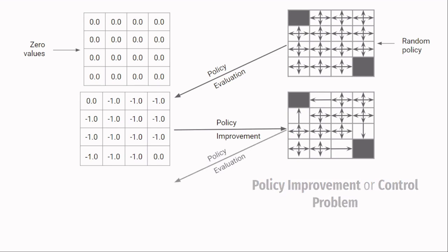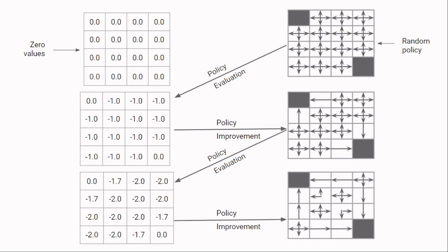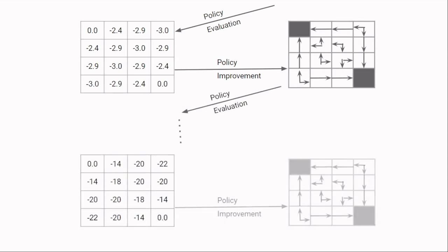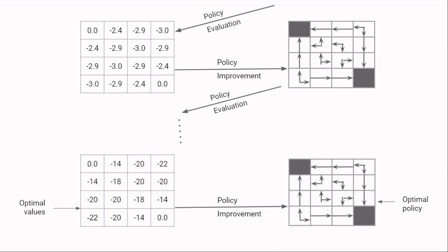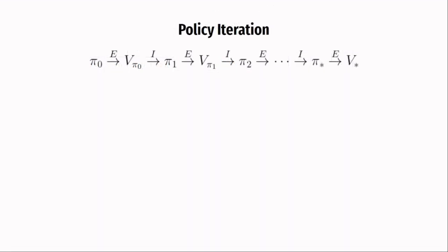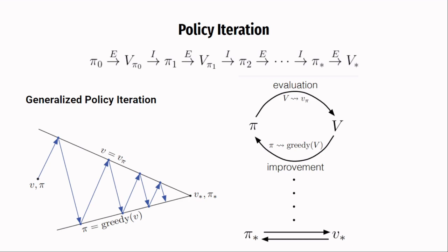We now repeat the same steps to find the new values for this improved policy and then perform another improvement step. After a sufficient number of iterations, the values and the policy converge to an optimum. The cycle of policy evaluation and policy improvement is called policy iteration. If we ignore the granularity of the evaluation and improvement steps, we end up with generalized policy iteration — a cycle of evaluation, predicting values for a policy, and improvement, acting greedily with respect to those values. Slowly, these steps converge to an optimal value V* and optimal policy pi*.